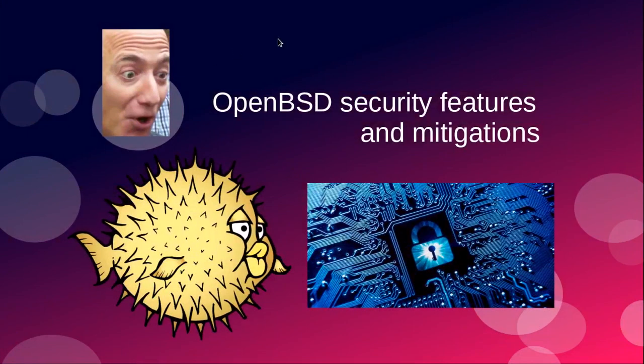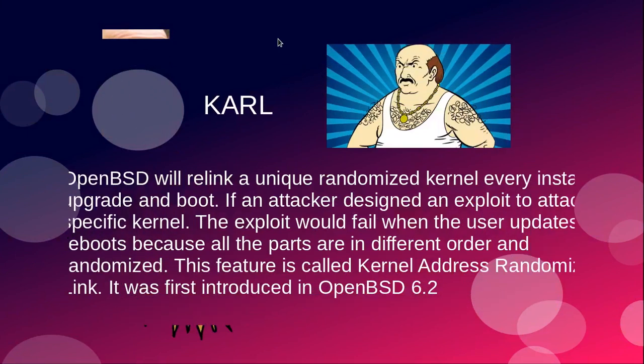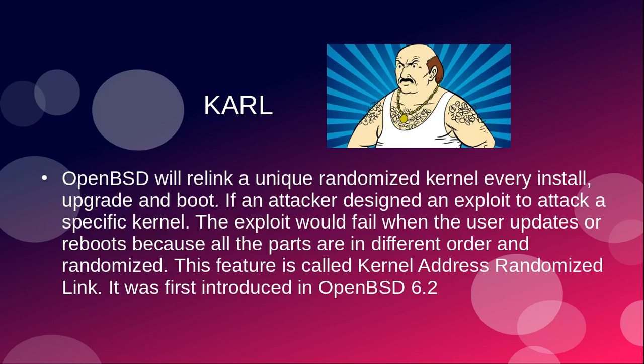OpenBSD security features and mitigations. The first security feature I'm going to discuss is called KARL. OpenBSD will release a unique randomized kernel every install, upgrade, and boot. If an attacker designed an exploit to attack a specific kernel, the exploit would fail when the user updates or reboots because all the parts are in different order and randomized. This feature is called Kernel Address Randomized Link, first introduced in OpenBSD 6.2. Every time you reboot or upgrade, OpenBSD will relink a unique randomized kernel.